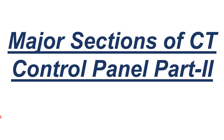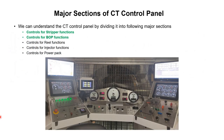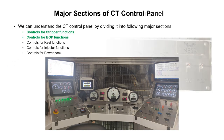Here we will continue our discussion regarding major sections of the CTU control panel. In the first part of this tutorial, we have already discussed controls for the stripper function and controls for the BOP function. Now the remaining three bullet points — controls for the reel functions, controls for the injector functions, and controls for the power pack — will be discussed. So let's see the first bullet point: controls for the reel function.